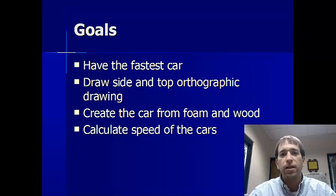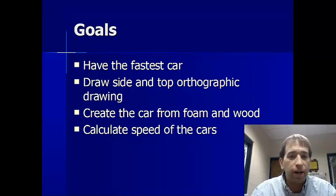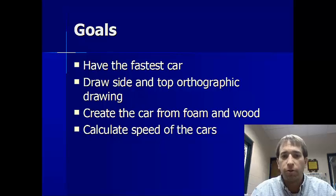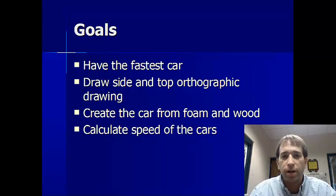We're also going to draw a side and a top view orthographically. In art class, they call it still life. For us, you're going to draw exactly what you see from the side and exactly what you see looking down on the car or your top view. We're also going to create a car from foam, which will be our prototype, and then we'll create our racing car, which will be made out of balsa wood.